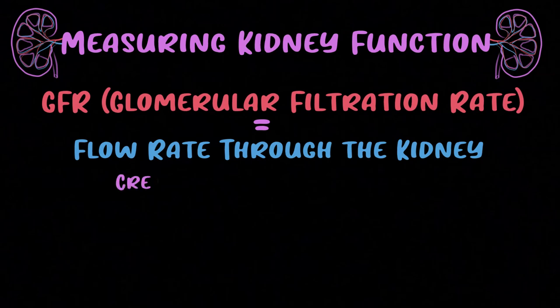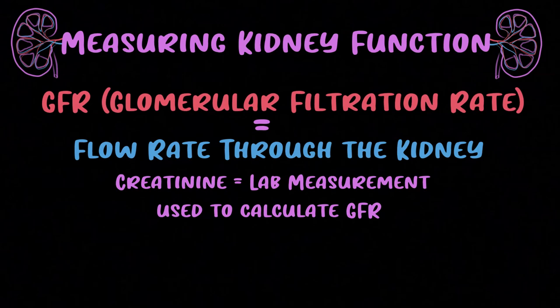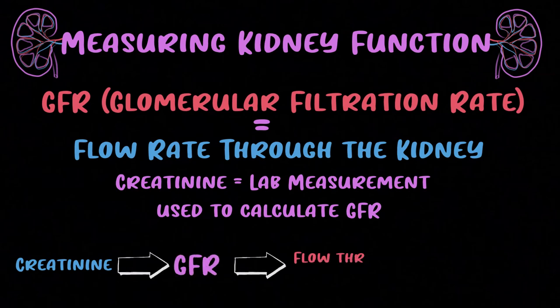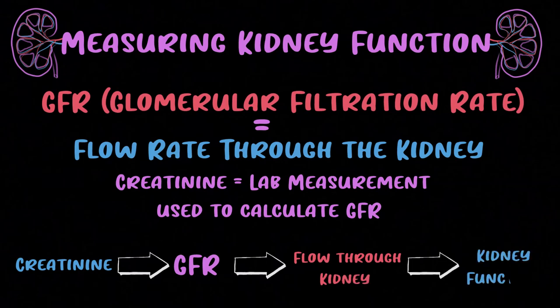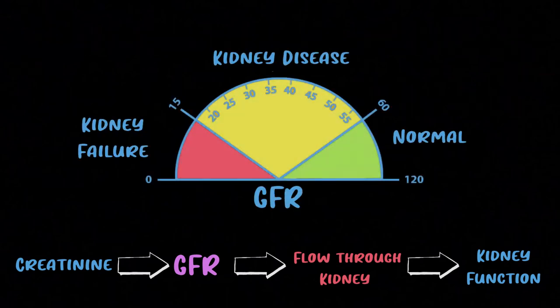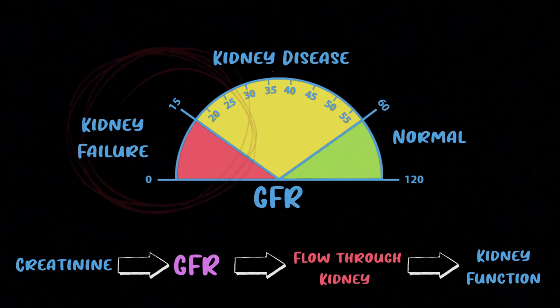We measure kidney function by looking at creatinine in the blood. Creatinine is released at a constant rate in the body, and by measuring it we can estimate the eGFR. The creatinine level tells us the glomerular filtration rate, which tells us the flow rate of fluid through the kidney, giving us a good idea of how well the kidney is functioning. If there's a lot of kidney damage, eGFR will be low.